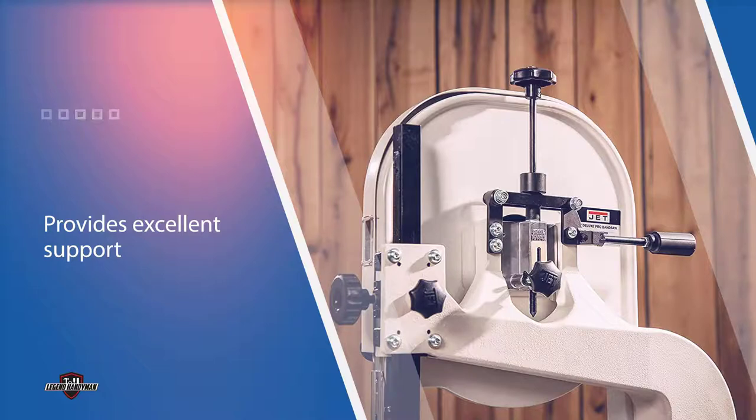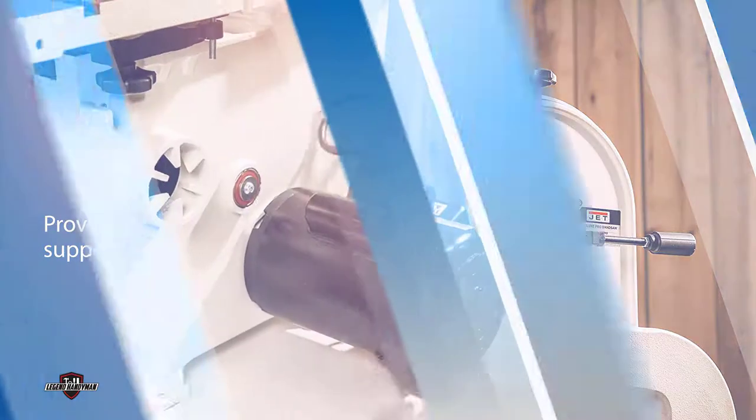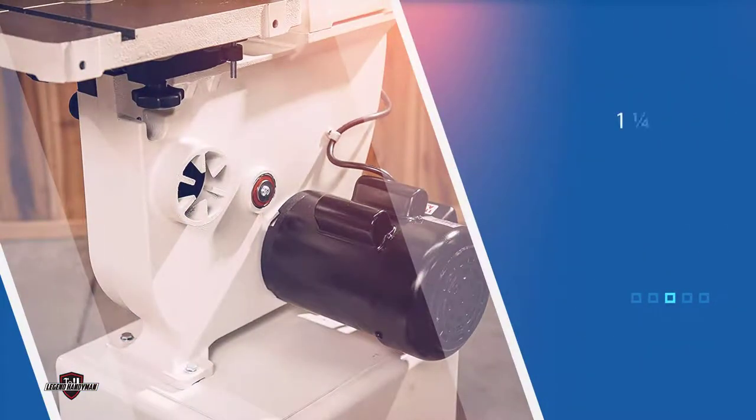With two speeds it makes short work of most cuts. Slower speeds glide through thicker pieces when resawing. The higher speed produces very clean accurate cuts when working with thinner stock.